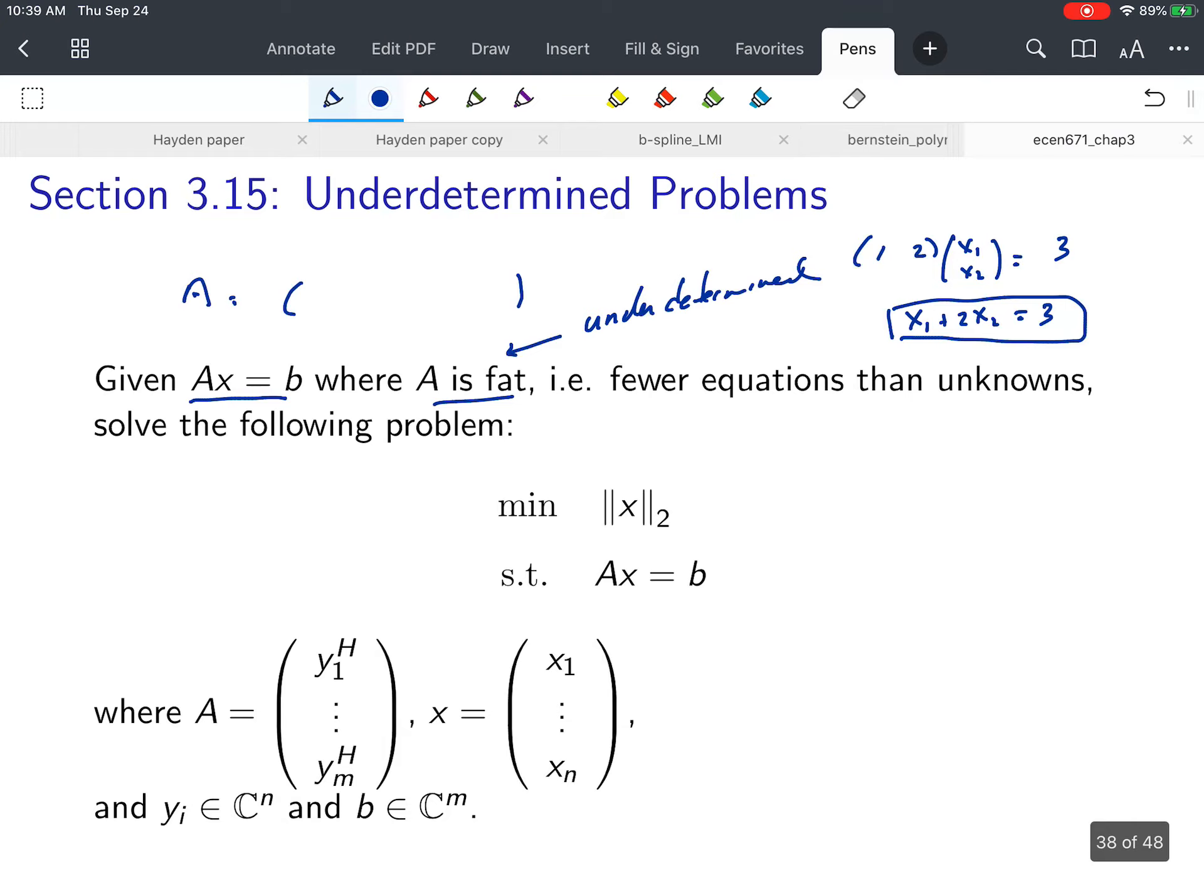So there are infinitely many solutions to this AX equals B problem. In general, with a fat matrix having fewer equations than unknowns, there will be infinitely many solutions. Which particular solution should we choose?